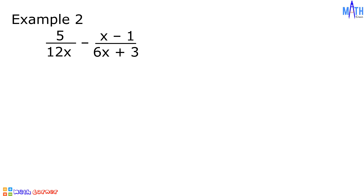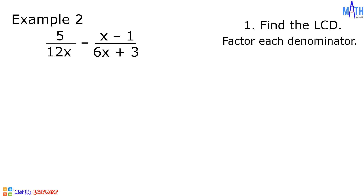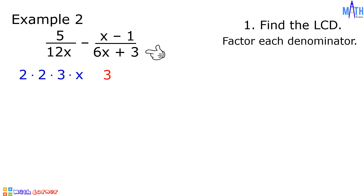Example number 2: 5 over 12x minus x minus 1 over 6x plus 3. Step number 1, let us find the LCD. Let us factor each denominator. In 12x, factors of 12x: we have 2 times 2 times 3 times x. 6x plus 3 is a binomial where the GCF is equal to 3. If we factor out 3, then we are left with 2x plus 1, since 6x divided by 3 is 2x and 3 divided by 3 is 1.